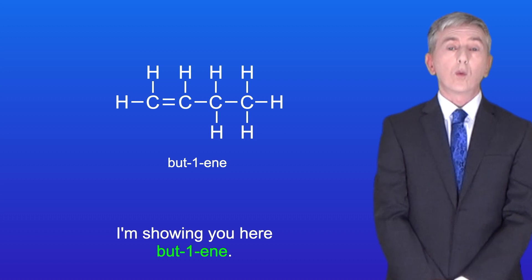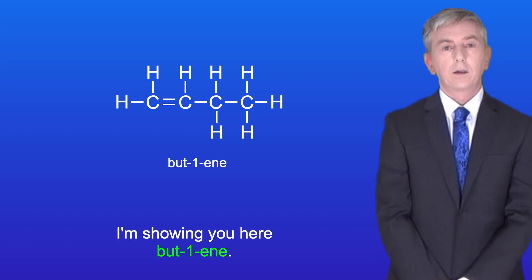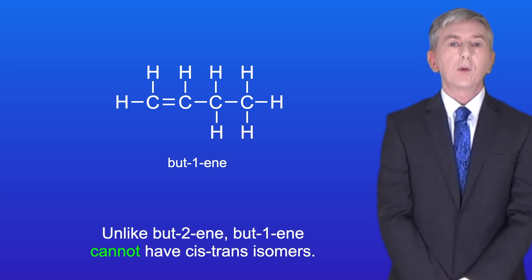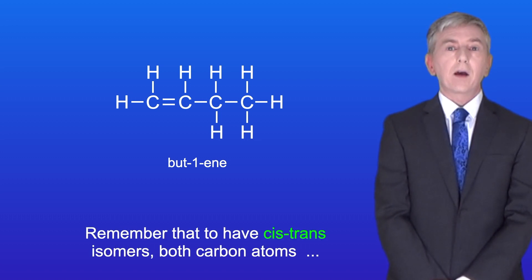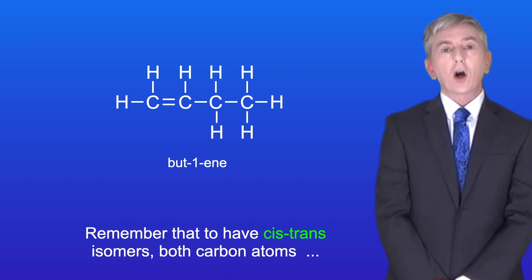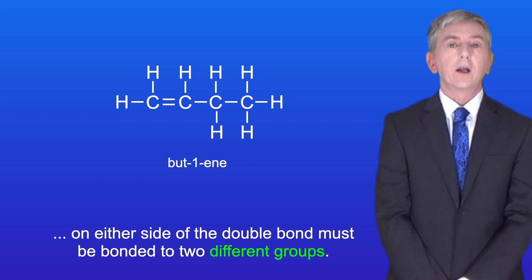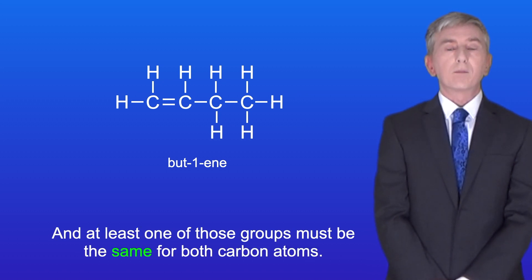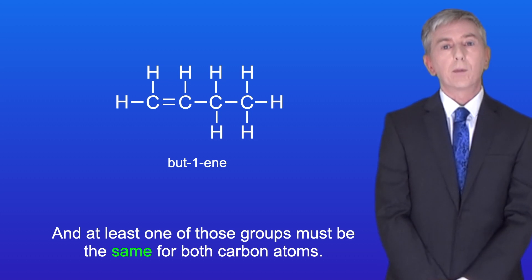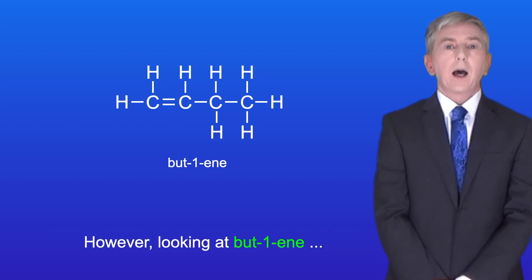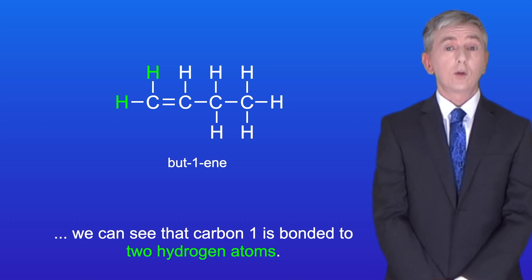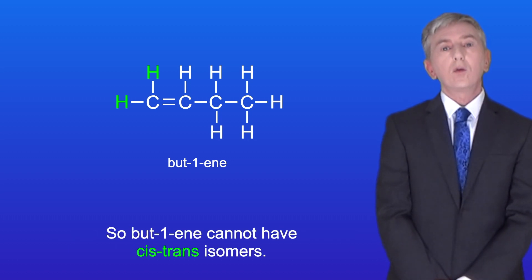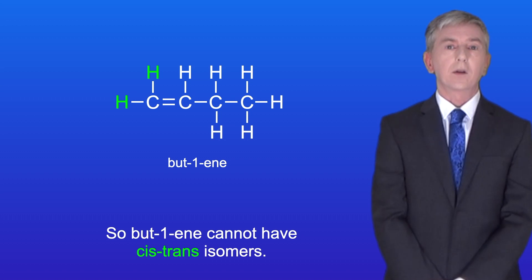Here is but-1-ene. Unlike but-2-ene, but-1-ene cannot have cis-trans isomers. Remember that to have cis-trans isomers both carbon atoms on either side of the double bond must be bonded to two different groups, and at least one of those groups must be the same for both carbon atoms. However, looking at but-1-ene we can see that carbon-1 is bonded to two hydrogen atoms, so but-1-ene cannot have cis-trans isomers.